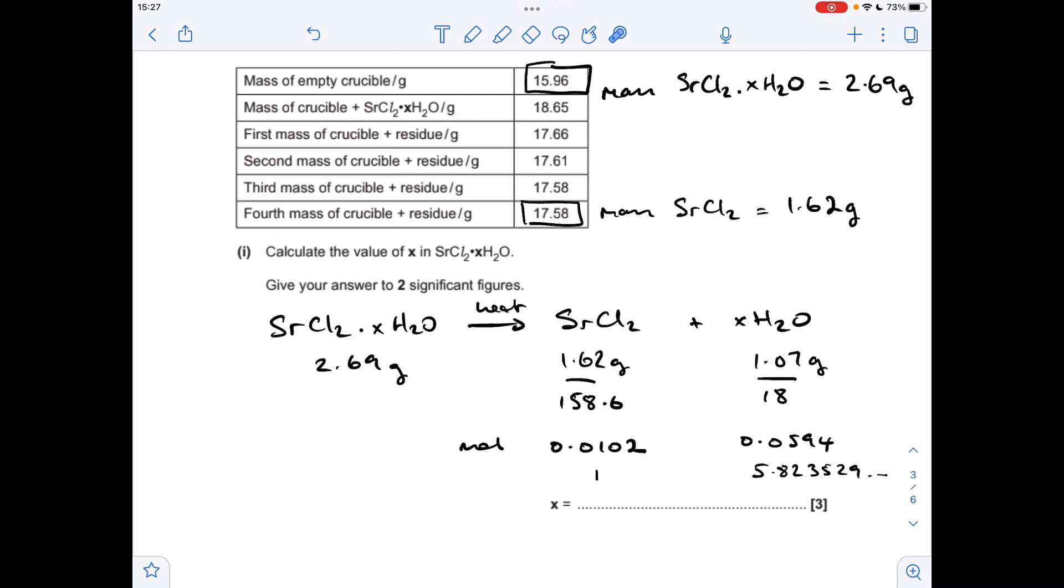In most questions on hydrated salt calculations you would express this to the nearest whole number, so you'd say a 1 to 6 ratio. However they've asked for it to two significant figures, so the answer is going to be 5.8.